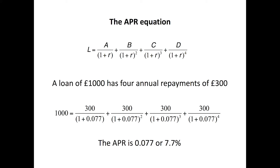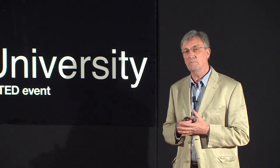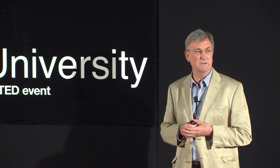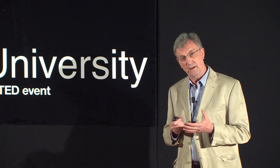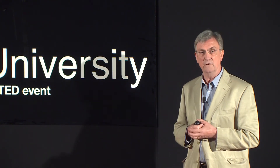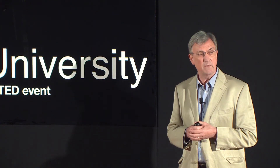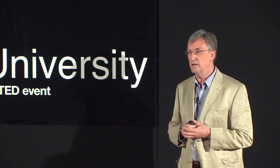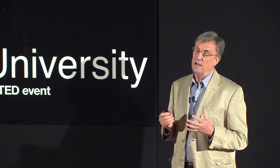In this particular case, the APR is 7.7%. So when you go to the bank and ask for a loan, they say: you've asked for £1,000, we'll give you that loan, and you'll have to pay us back £300 each year for the next four years — and the interest rate is 7.7%. By law, they're forced to tell you that.